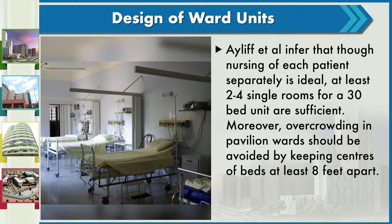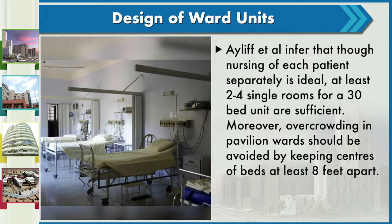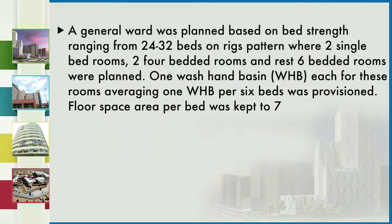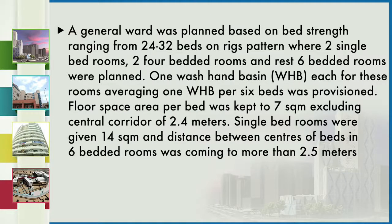To address overcrowding in pavilion wards, centers of beds should be kept at least 8 feet apart. As an example, a general ward was planned with 24 to 32 beds in a rigs pattern with two single-bed rooms, two four-bedded rooms, and the rest six-bedded rooms. One hand wash basin was provided per six beds. Floor space was kept to 7 square meters per bed excluding a central corridor of 2.4 meters. Single bedrooms were given 14 square meters, and the distance between bed centers in six-bedded rooms was more than 2.5 meters.